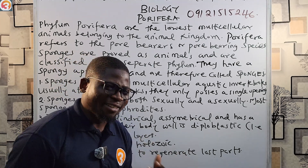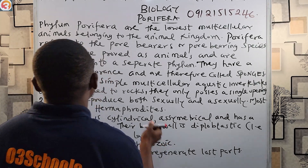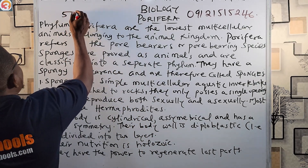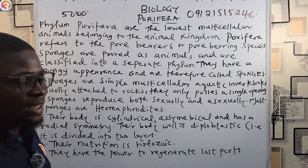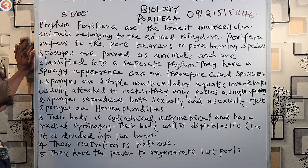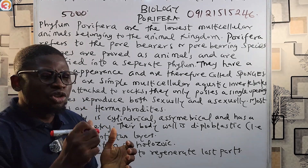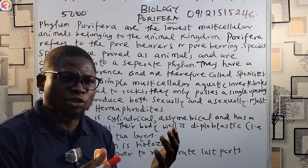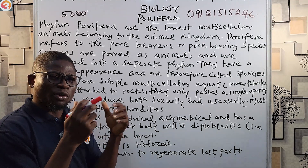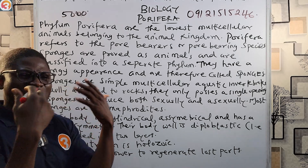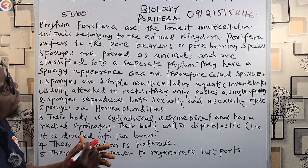There are up to 5,000 species of Porifera or sponges. The exchange of respiratory gases and nitrogenous waste is by diffusion — that is, the way they release respiratory gases and nitrogenous waste is through diffusion.